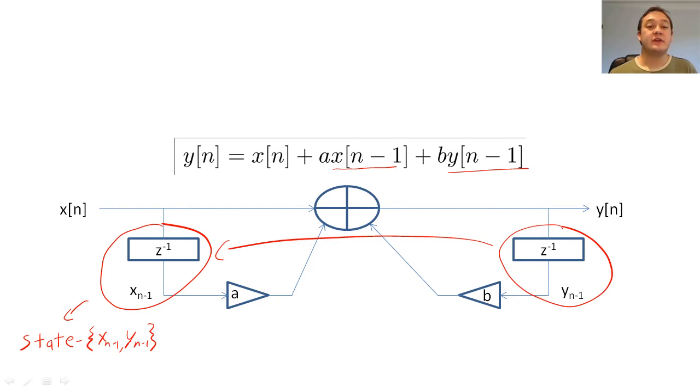Since our system is defined by two functions, the state and the input, we define y of n to be the summation of the system's response to the input and to the initial state. We call y sub x of n the zero state response. The zero state is when all of the delay registers equal zero. We call y sub s of n the zero input response. The zero input response is what y of n would be if we only input zero for all eternity. We call this property of y of n the decomposition property.